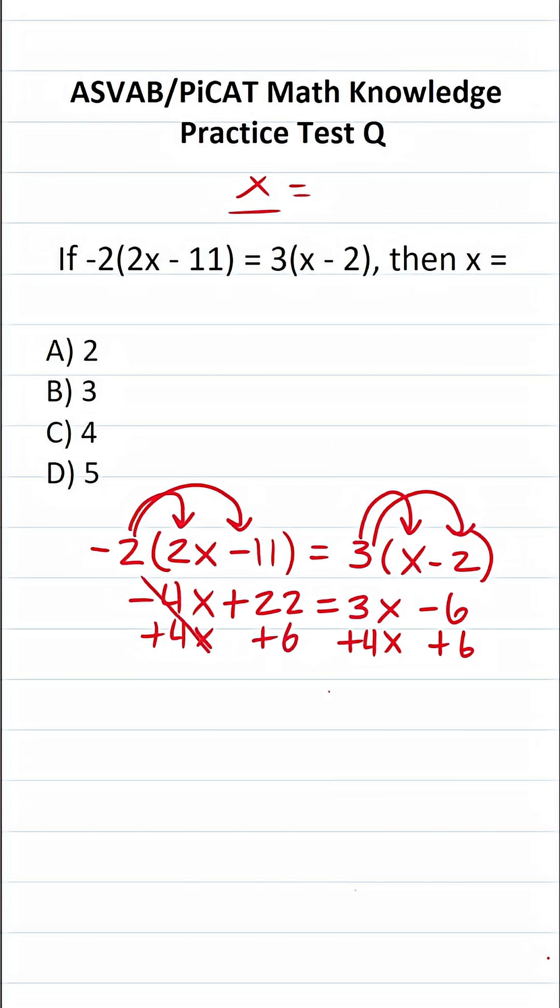In doing so, this crosses out because negative 4x plus 4x is zero. What is 22 plus 6? That's going to be 28 equals 3x plus 4x is going to be 7x. And then negative 6 plus 6 is zero.